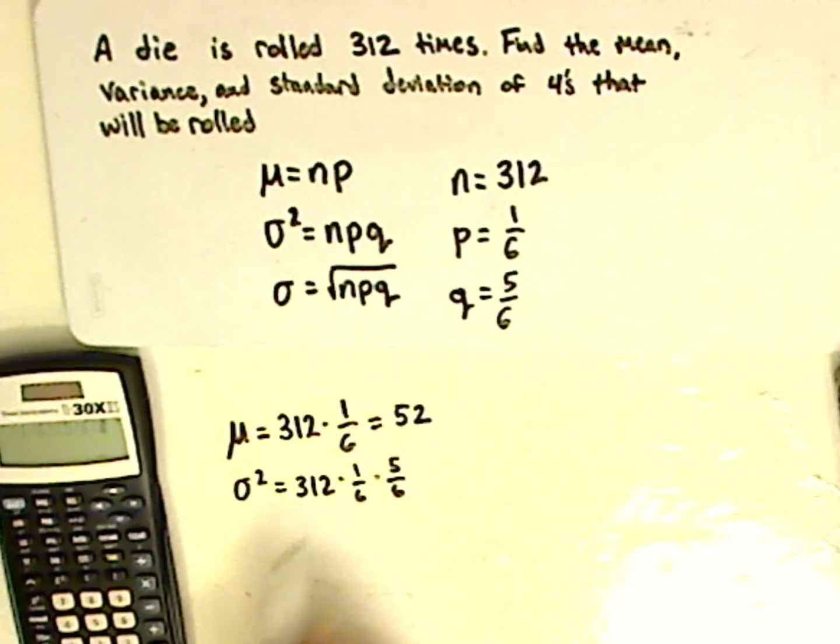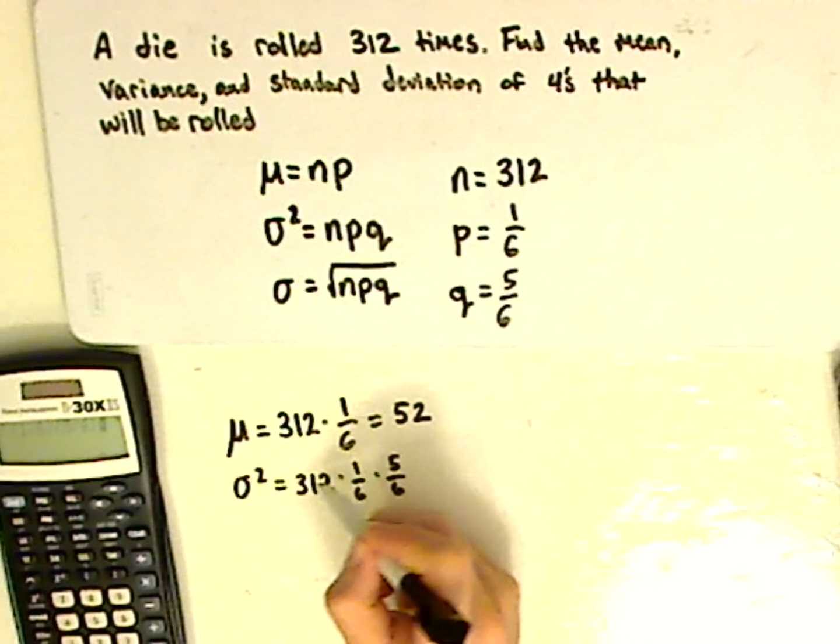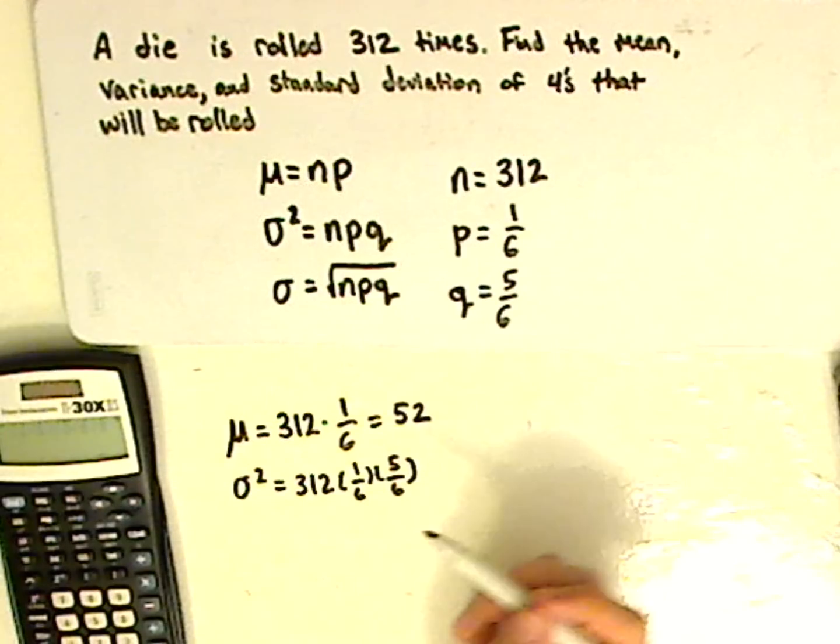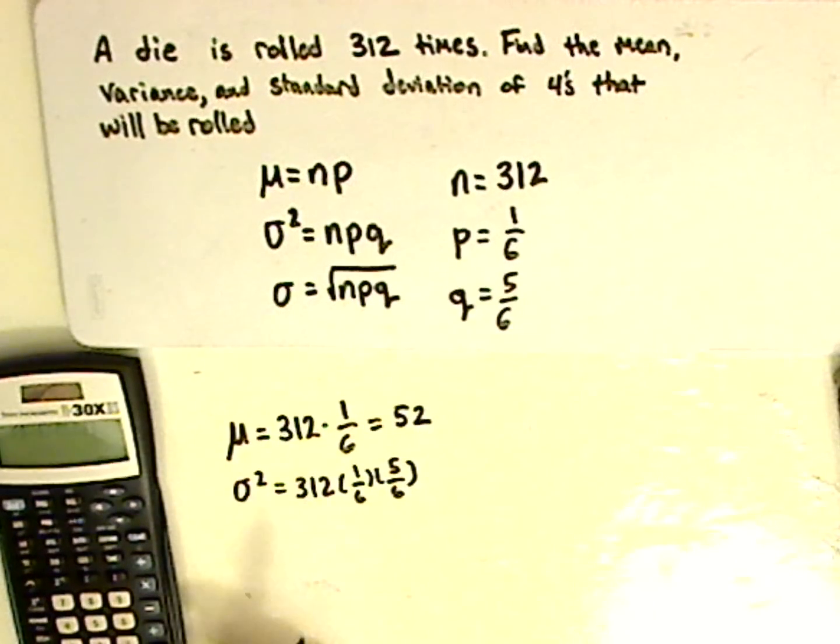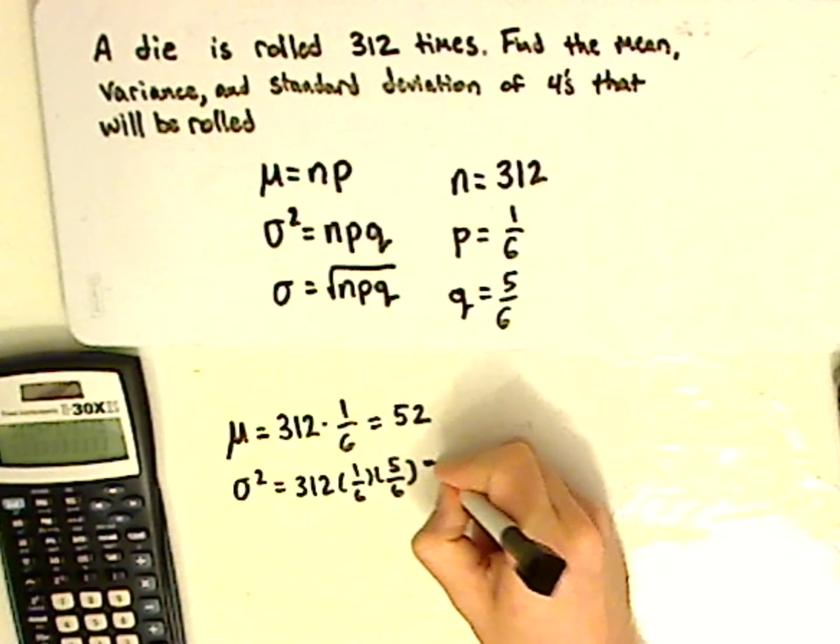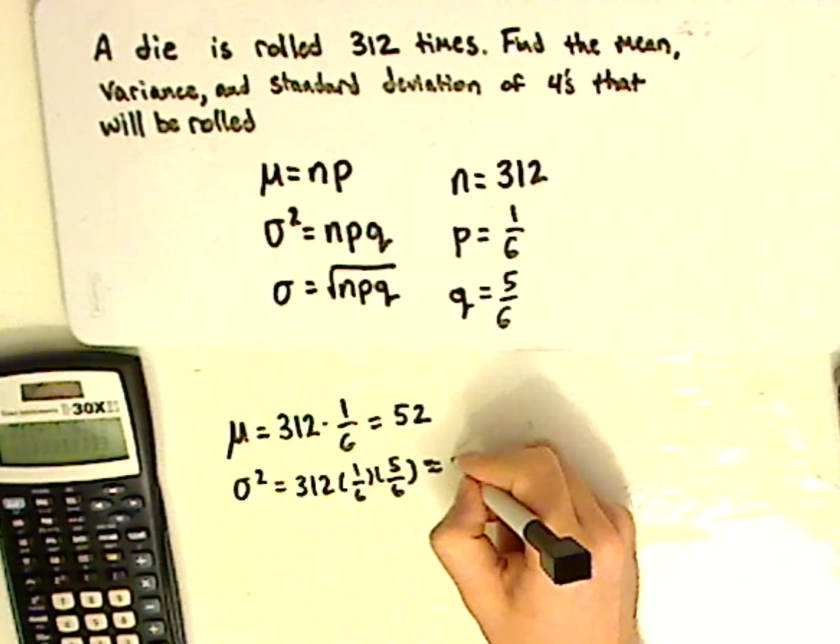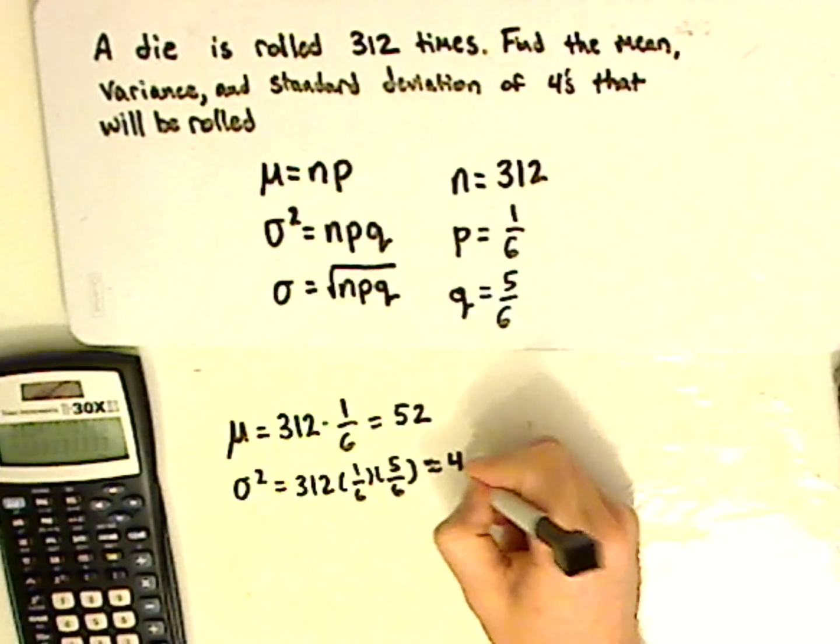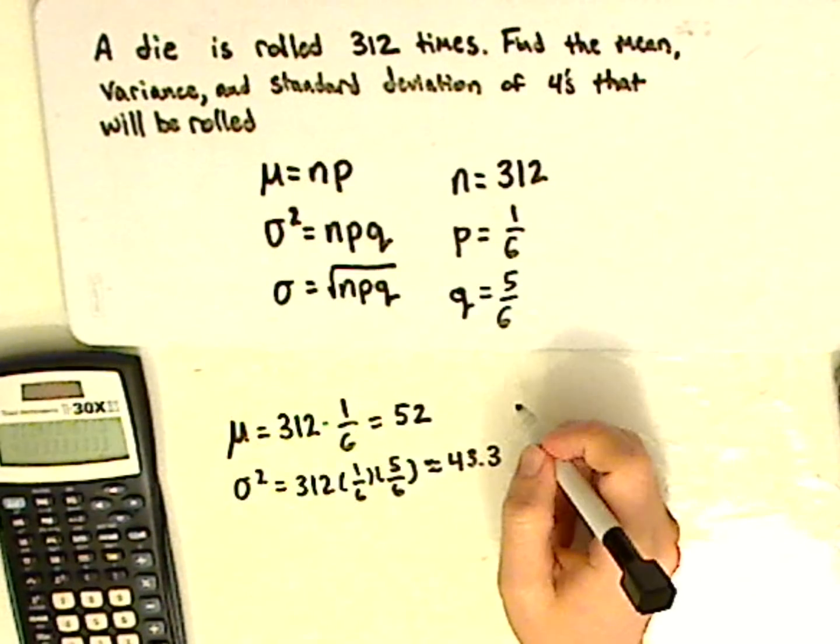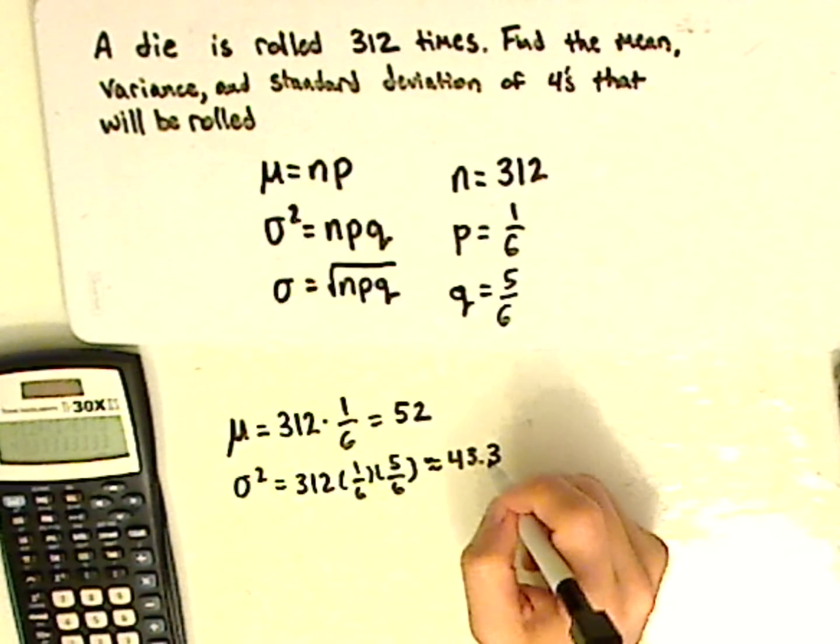And as I'm putting these into my calculator, I'm putting them in parentheses, which is approximately 43.3. It's 43.3 repeating.